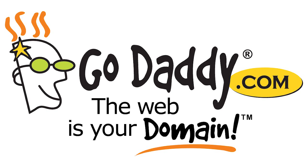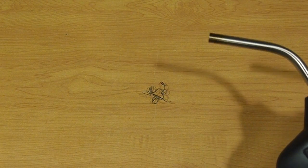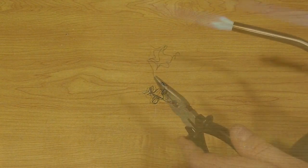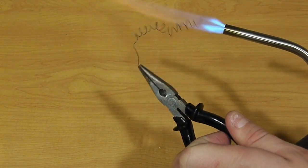This episode of Scientific Tuesday is brought to you by GoDaddy. Today we're going to check out nitinol, which is an alloy that goes back to its original shape when heat is applied. Let's go!